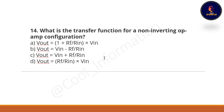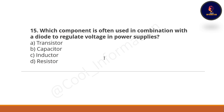Next question: What is the transfer function for a non-inverting op-amp configuration? Option A: V-out = (1 + Rf/Rn) × Vin. Option B: Vin − Rf/Rn. Option C: Vin + Rf/Rn. Option D: Rf/Rn × Vin. The correct option is V-output = (1 + Rf/Rn) × Vin.